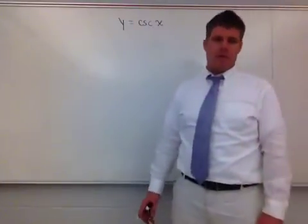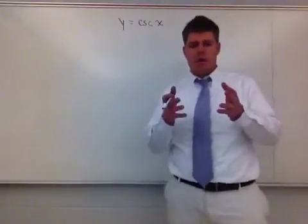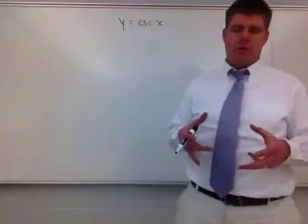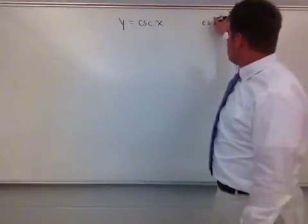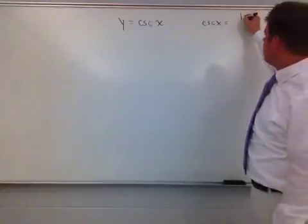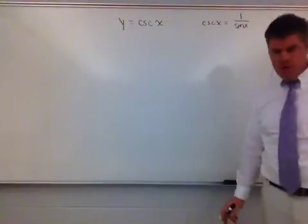Hey, we're going to talk about graphing the cosecant of x. This all stems back to your reciprocal identities here, where the cosecant of x is the same thing - so the cosecant of x is equivalent to 1 divided by the sine of x, and that's important.